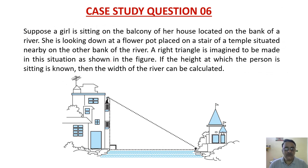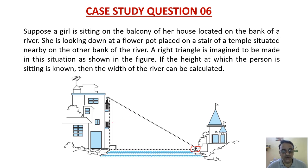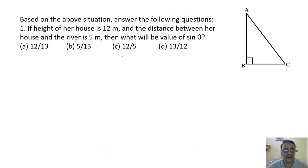Case study question 6: A girl is sitting on the balcony of her house on the bank of a river, looking down at a flower pot on a stair of a temple on the other bank. A right triangle is imagined in this situation. If the house height is 12 meter and the distance between the house and the river is 5 meter, find sin θ.